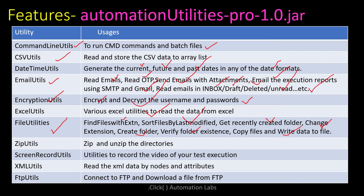Zip Utilities let you zip your result files into a zip archive, which you can then send via email using Email Utilities. Screen Record Utilities allow you to record your test execution and save it as a video file. XML Utilities help with assertions or reading data from XML by node, tag name, or attribute. FTP Utilities let you connect to an FTP server and dynamically upload or download files. I'll keep adding and enhancing these utilities to make them industry-standard for global usage.